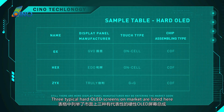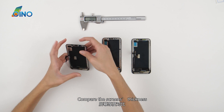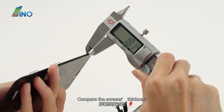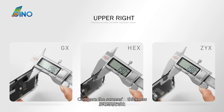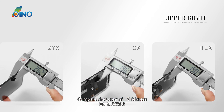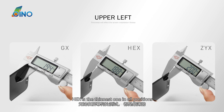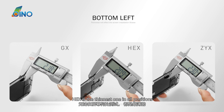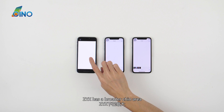Three typical hard OLED screens on the market are listed here. Comparing the screen thickness, HEX is the thinnest one in all positions, while ZYX has a broader chin area.